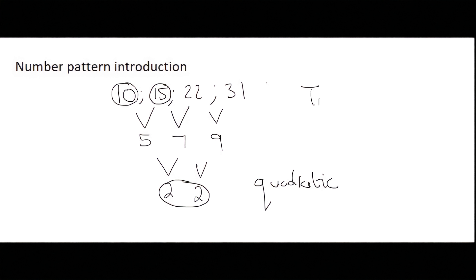Quadratic number patterns have the general formula Tn = An² + Bn + C, and this you must remember because they won't give it to you on the formula sheet. There are two different ways to solve for A, B, and C.